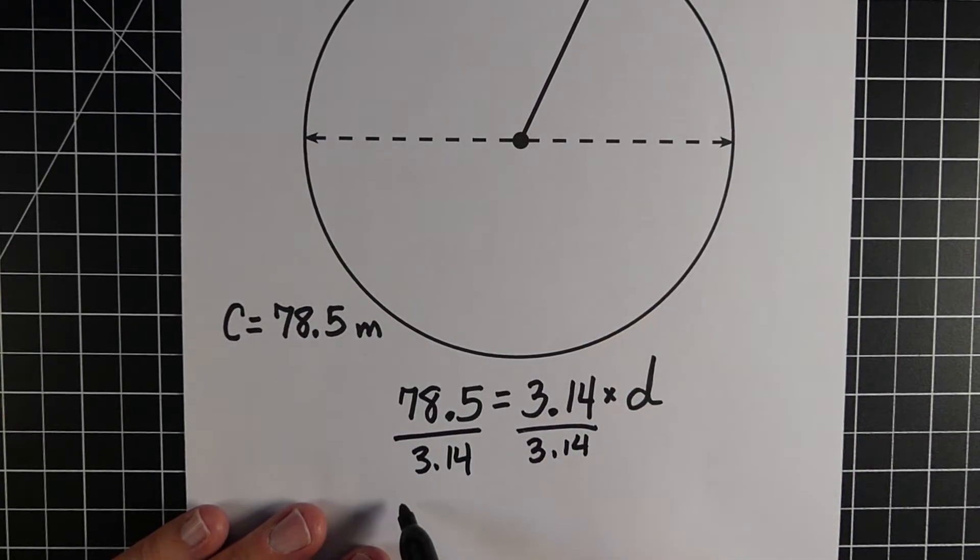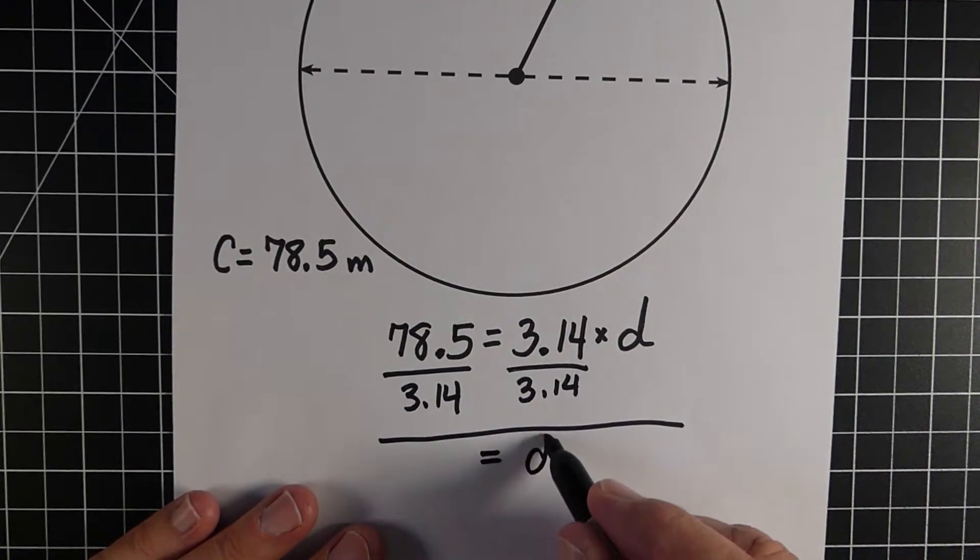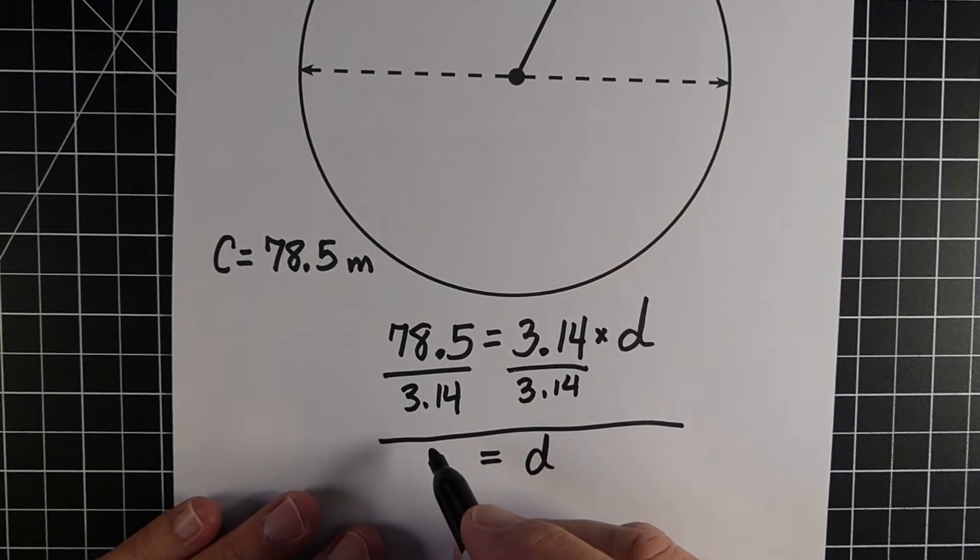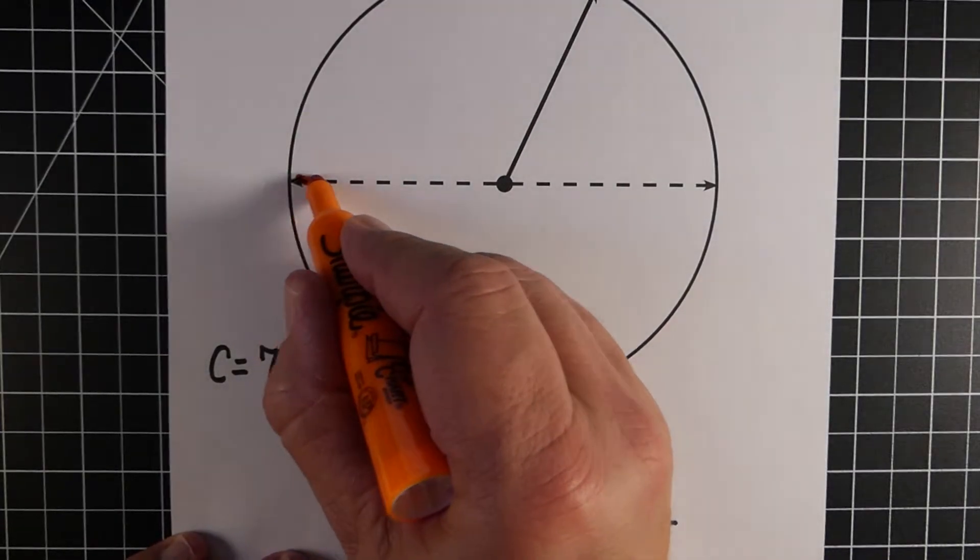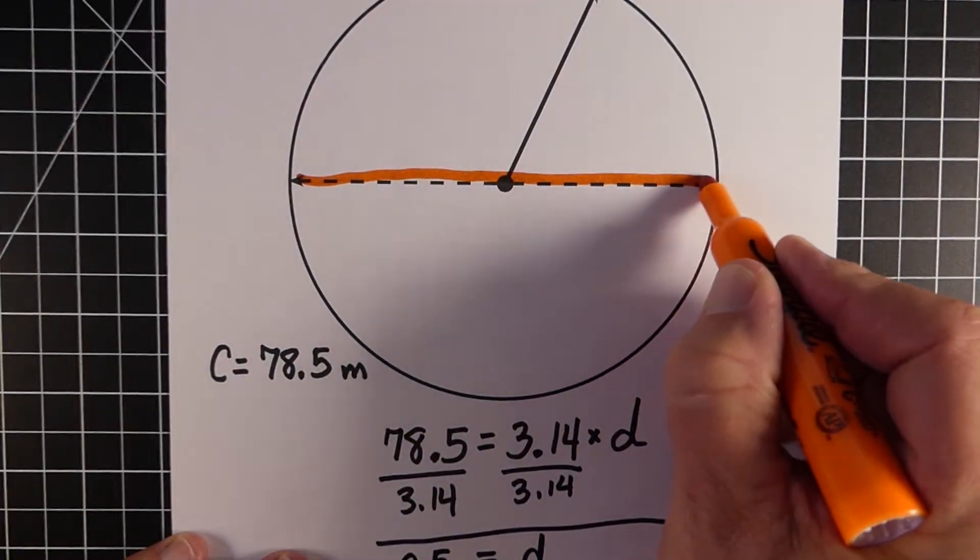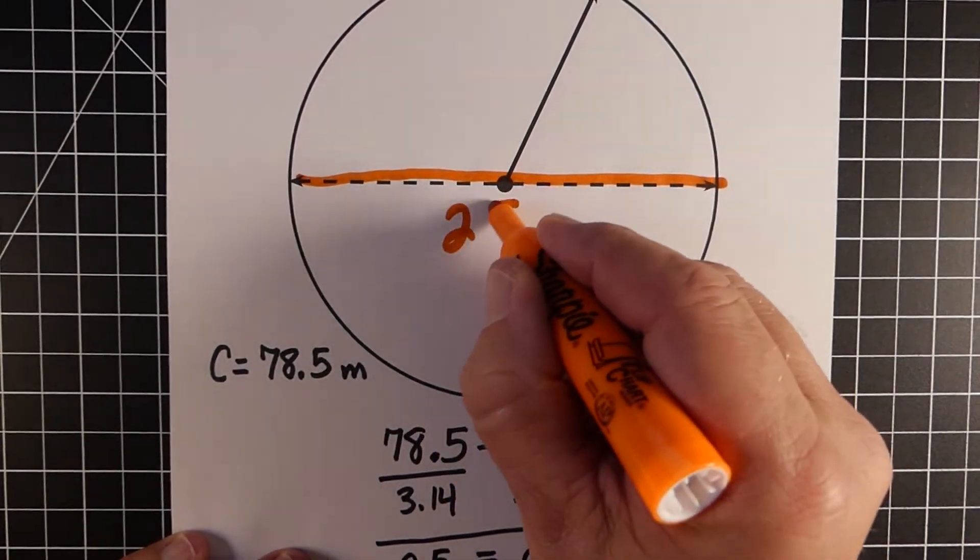So what's left on the right side is going to be the D for the diameter. So the 3.14s would just cross each other out. And on the left side, we're going to take the 78.5, divide by 3.14, and we get 25. The 25 is the diameter. So since we're talking meters, it would be 25 meters.